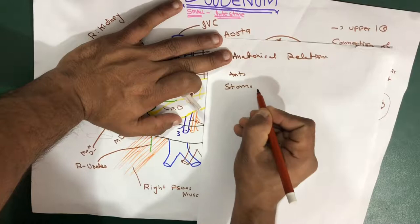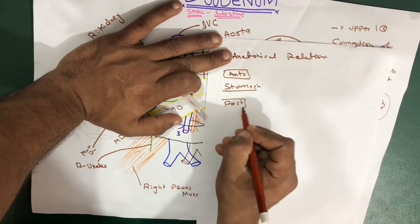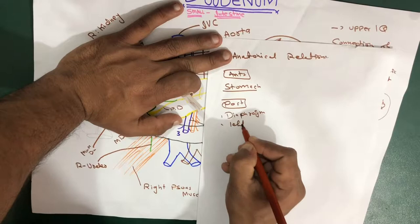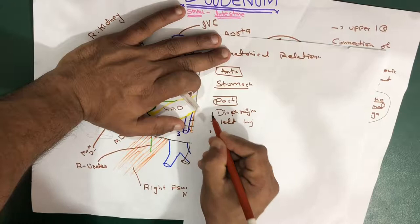Posteriorly, we have the diaphragm. We also have the left lung, because the spleen is on the left side, that's why the left lung. And we have ribs — ribs 9 to 11 — posteriorly.